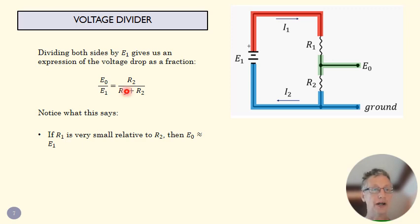If we make R1 very small, R2 and R2 are basically the same, so the numerator and the denominator are basically the same, this becomes 1, and E0 and E1 are the same. So what happens there?